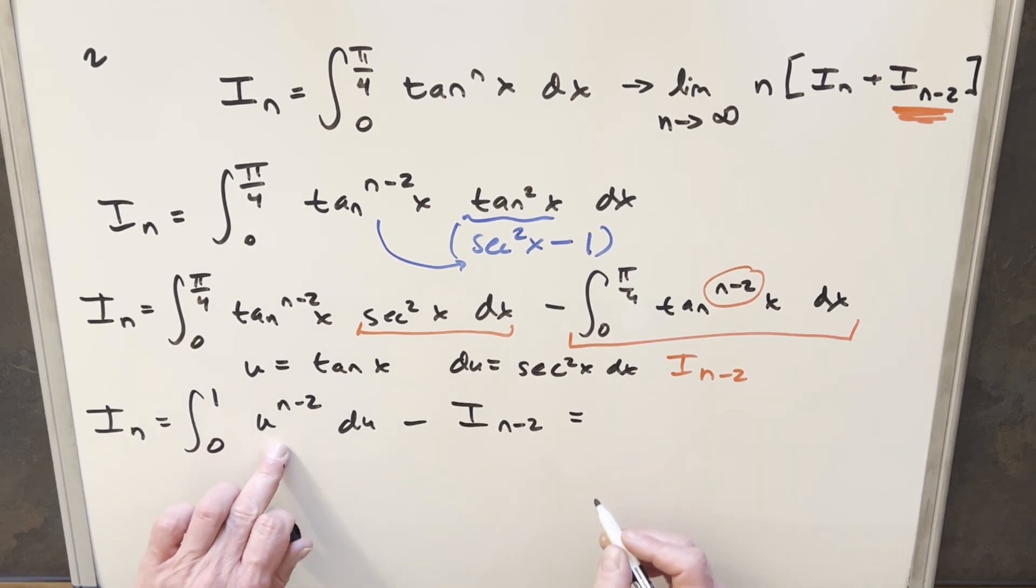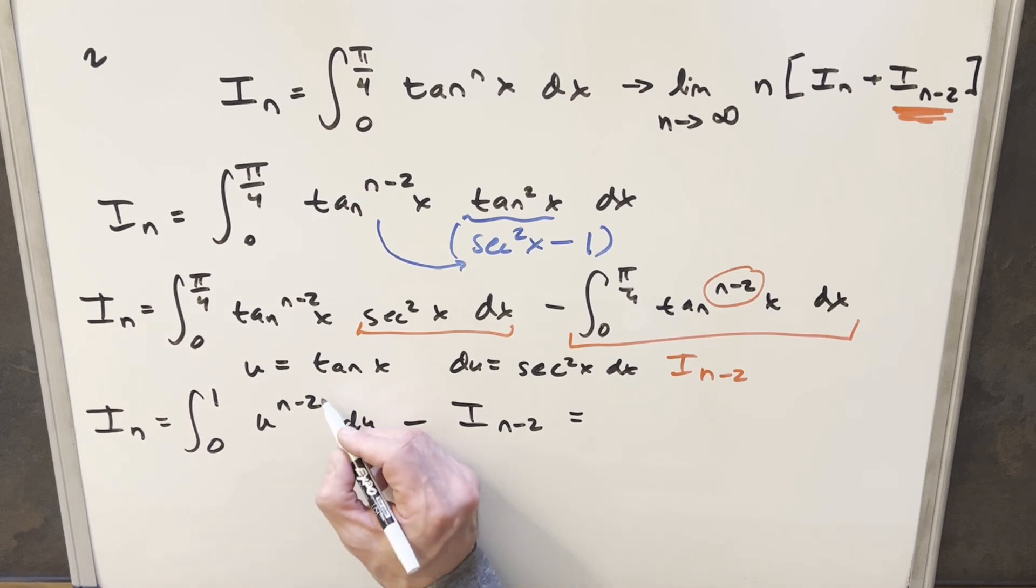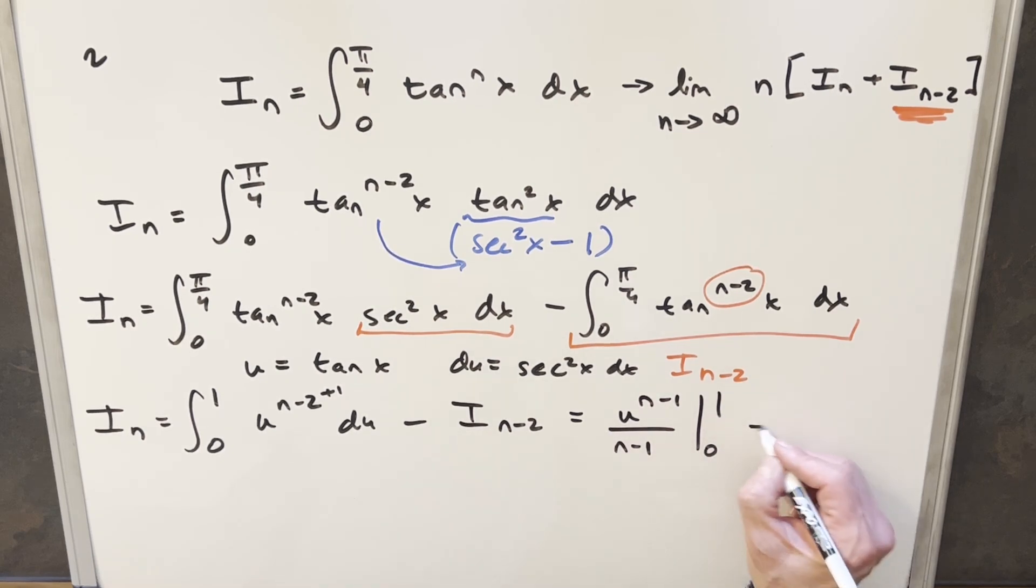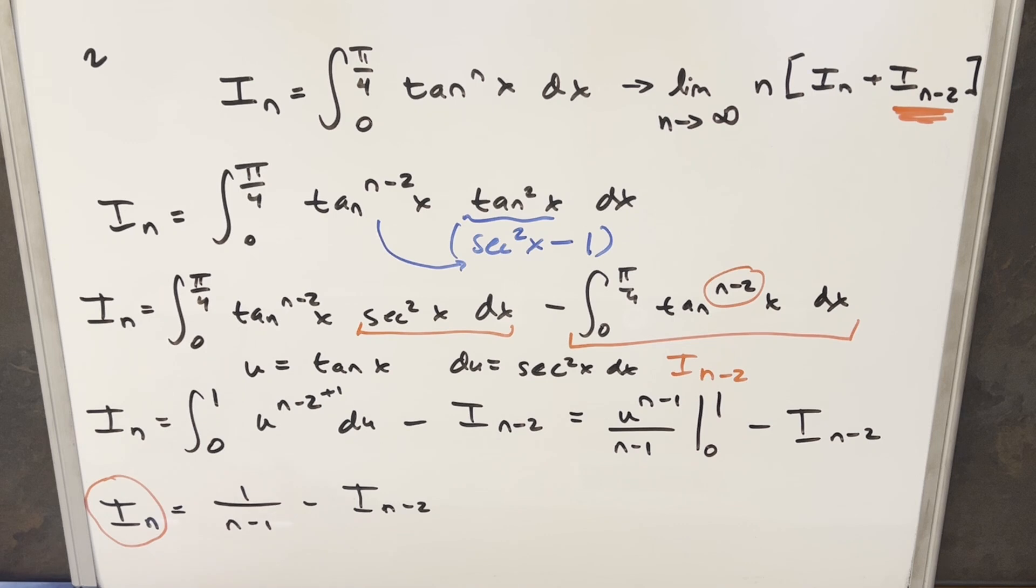But now on this right here, I can just integrate this using the power rule, just adding plus 1 on that and putting it into the denominator. So this is going to become u n minus 1 over n minus 1, evaluate it from 0 to 1. We'll just bring this thing over. But now when we evaluate this at 0, it's just going to be 0, so we're just evaluating this at 1. So plugging 1 in here, we just get 1 over n minus 1, and then we'll bring this thing along for the ride. And now this gives me a nice formula for I sub n. So that's about all we can do with this.